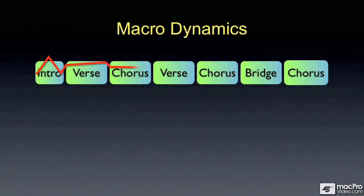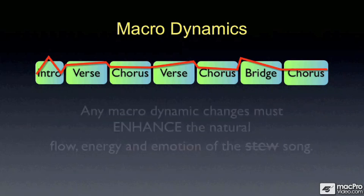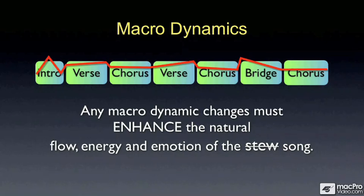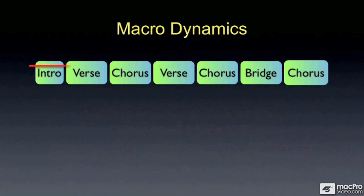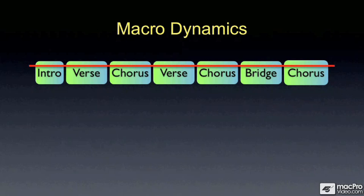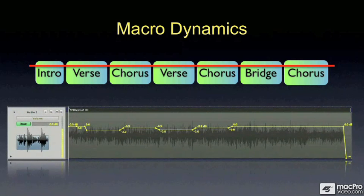Songs can be all kinds of different emotional shapes, and whatever that emotional shape is, if it works, you're there to enhance it. Any macro-dynamic change must enhance the natural flow, energy, and emotion of the song — that's what we're trying to do as mastering engineers. We don't always get songs that have dynamics built into them. Sometimes you get a mix that is just really flat — no dynamic differences between the verses and the choruses. We use track automation to address this, and not just to fix flat songs; we can use it to enhance songs that already have a great dynamic and emotional line.